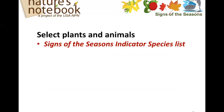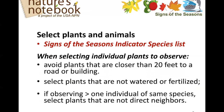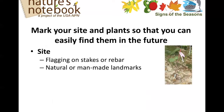We hope that you'll select species from the Signs of the Seasons indicator species list — plants and animals from that list. When selecting individual plants to observe, the ideal guidelines include avoiding plants that are closer than 20 feet to a road or building, selecting plants that are not watered or fertilized if possible, and if observing more than one individual of the same species, select plants that are not direct neighbors to each other.